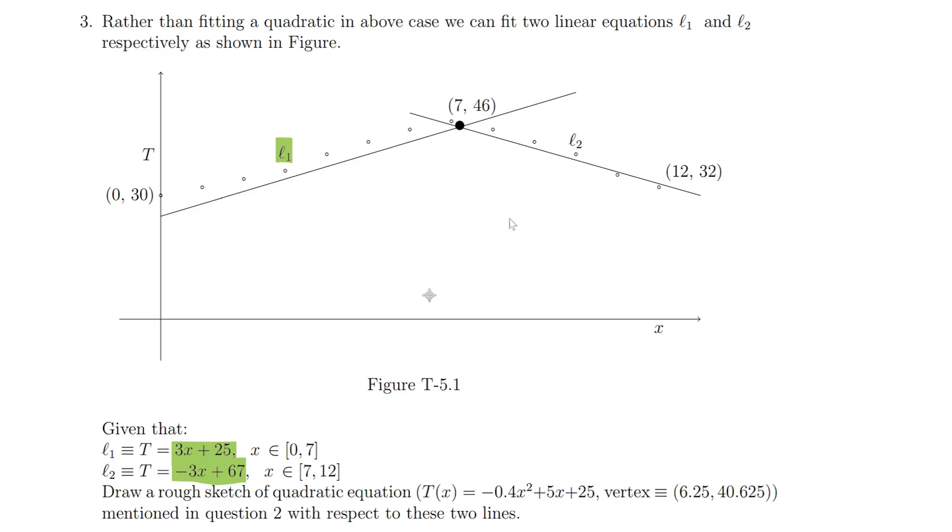L1 is y equals 3x plus 25, and L2 is y equals minus 3x plus 67, and the curves are already given.